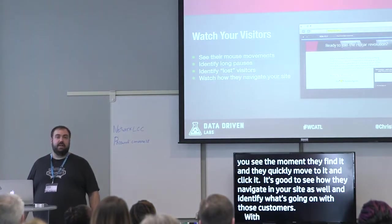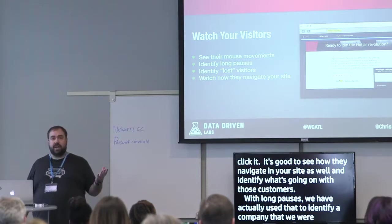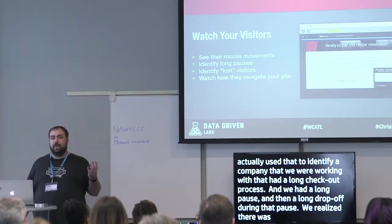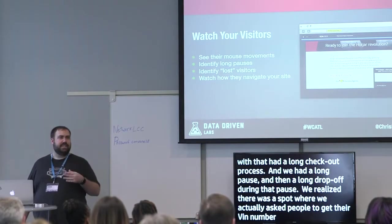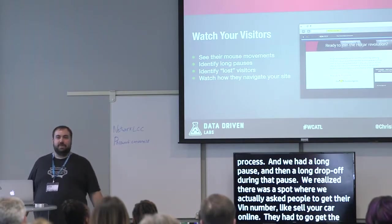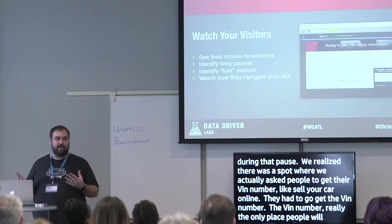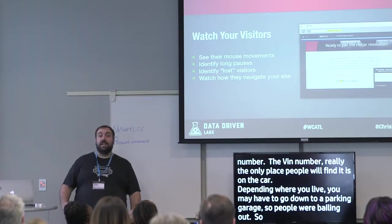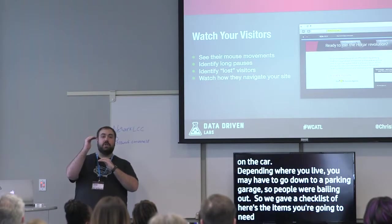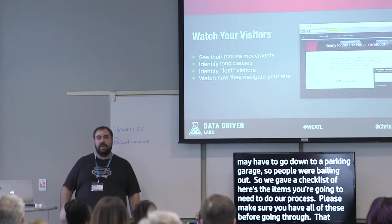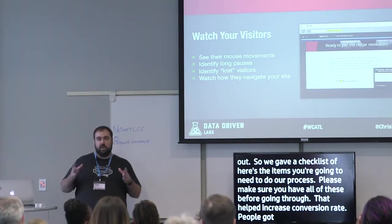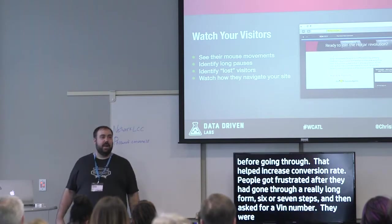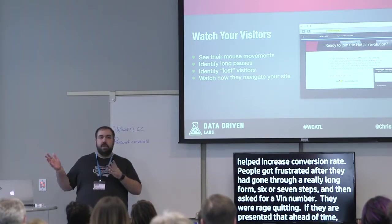With long pauses, we identified an issue for a client with a long checkout process — a 'sell your car online' form. There was a long pause and a big drop-off where we asked for the VIN number. The VIN is really only found on your car, and depending where you live, you may need to go to a parking garage. People were bailing out. We fixed it by providing a checklist upfront: 'Here are the items you'll need before going through this process.' That increased the conversion rate because people weren't rage-quitting after six or seven steps when hit with an unexpected request.